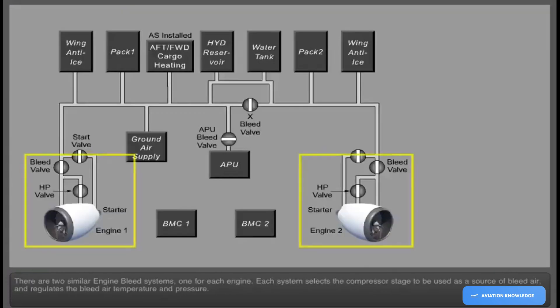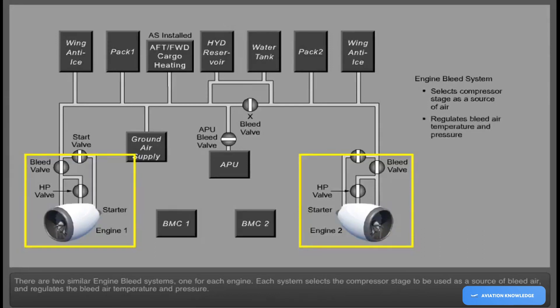There are two similar engine bleed systems, one for each engine. Each system selects the compressor stage to be used as a source of bleed air and regulates the bleed air temperature and pressure.